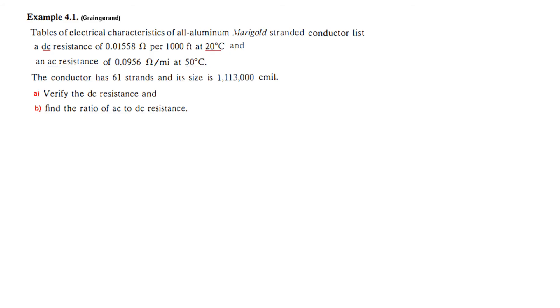Now let's do example 4.1. The tables of electrical characteristics of aluminium marigold stranded conductor list a DC resistance of 0.01558 Ω per 1000 ft at 20°C and an AC resistance of 0.0956 Ω/mile at 50°C. The conductor has 61 strands and its cmil area is 1,113,000 cmil. We have to verify the DC resistance and find the ratio of AC to DC resistance.